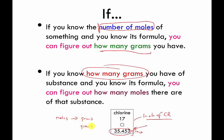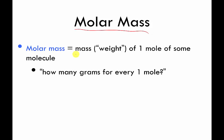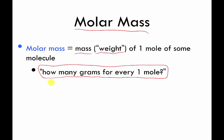The other major term introduced in the previous unit is molar mass. Molar mass is the mass or weight of one mole of something — how much does one mole of something weigh? Molar mass is basically answering this question: how many grams does my pile of one mole of atoms weigh?